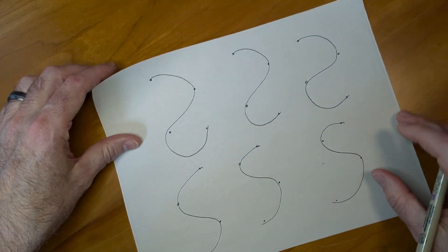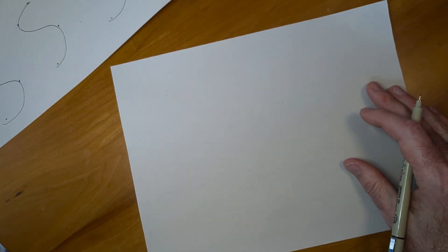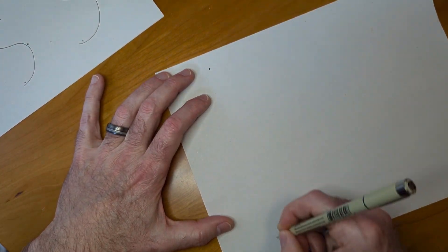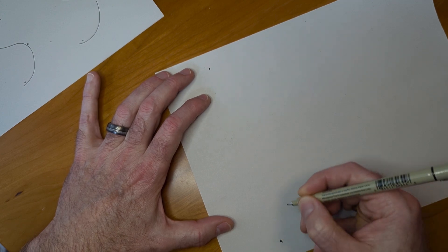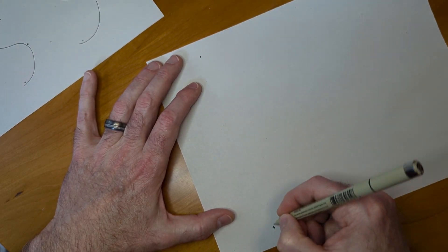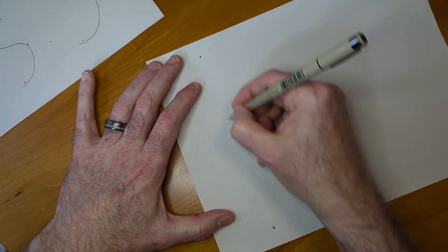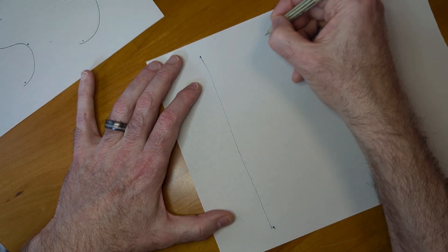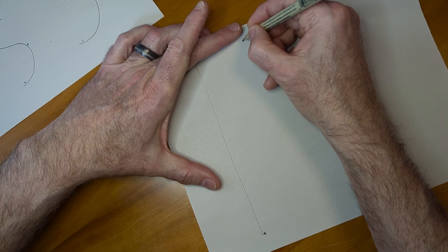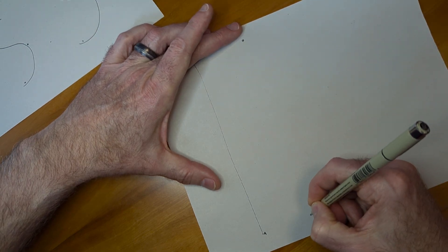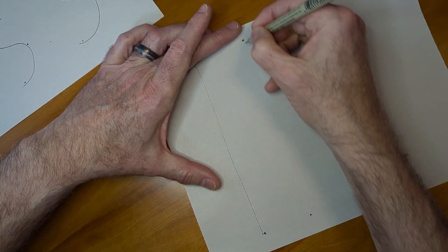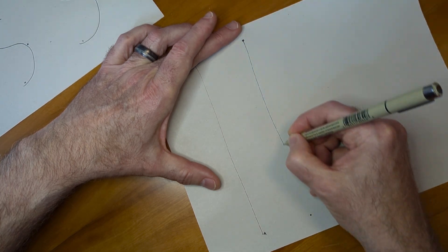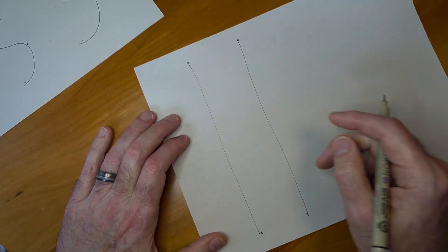Alright. So then next we're going to do some straights, target practice. Trying to start off at that top dot and go to the bottom one and hit it close. Don't go too far away, but maybe a couple inches here, an inch.